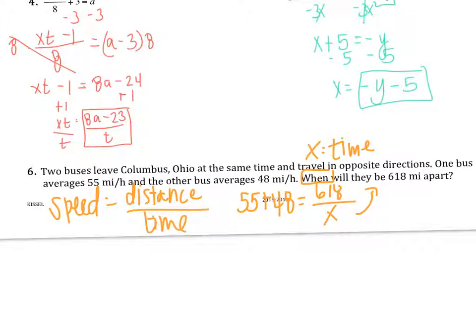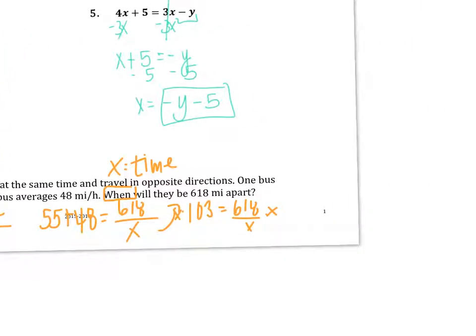So x is going to be my time over x. Now I just solve this equation. 55 and 48 give me 103, 618 over x. I multiply both sides by x to get clear of the denominator. I'll have 103x equals 618. I divide by 103 and I get x equals 6. Which means after 6 hours, because they're traveling in miles per hour, the buses will be 618 miles apart.